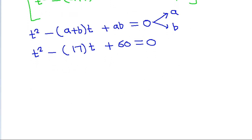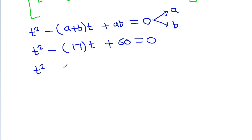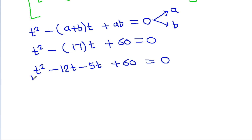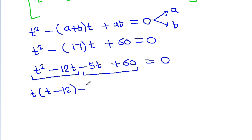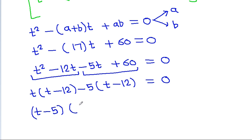We factor: T squared minus 17T plus 60 equals zero becomes T squared minus 20T minus 5T plus 60 equals 0. This factors as T times (T minus 20) minus 5 times (T minus 20) equals 0, giving us (T minus 5)(T minus 12) equals 0.